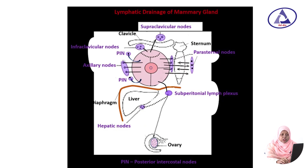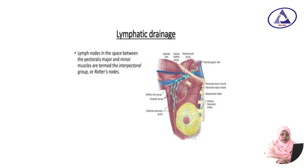Another picture shows the different types of lymphatic drainage pathways. Lymph nodes in the space between pectoralis major and minor are termed the interpectoral group or Rotter's lymph nodes. Another picture shows different types of lymph nodes and the metastatic pathway, where metastatic cells come from the mammary lymph node and spread to other structures.